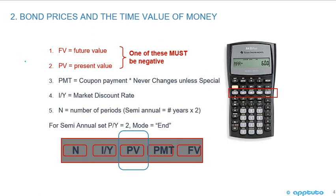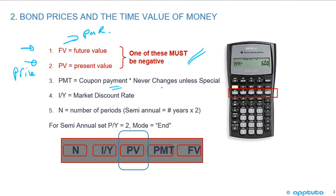Let's look at the calculator to see which keys we use to calculate the price of a bond, then we'll do an example. When calculating the price, one of the values — present value or future value — has to be negative. The present value is the price, the future value is the par value, and the payment is the coupon payment, which never changes unless it's a special bond like a floating rate note.